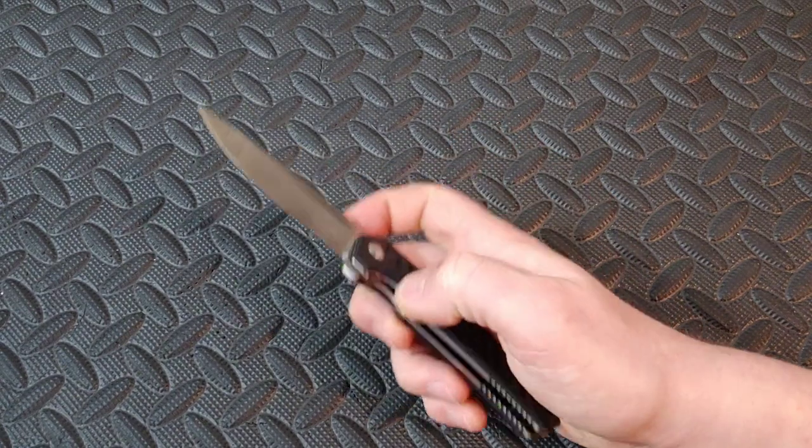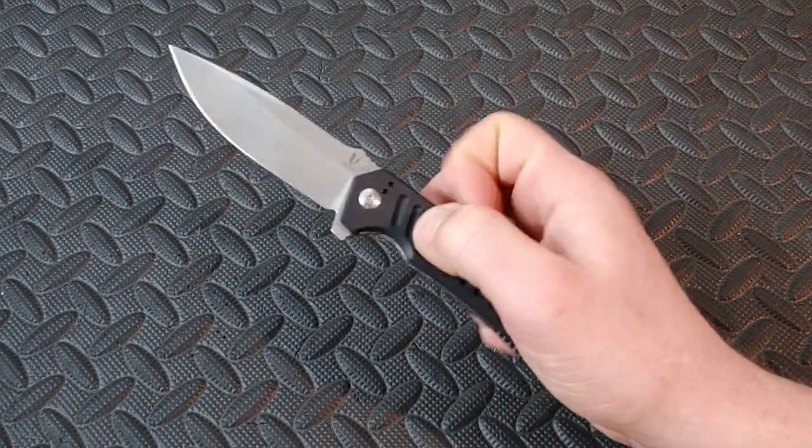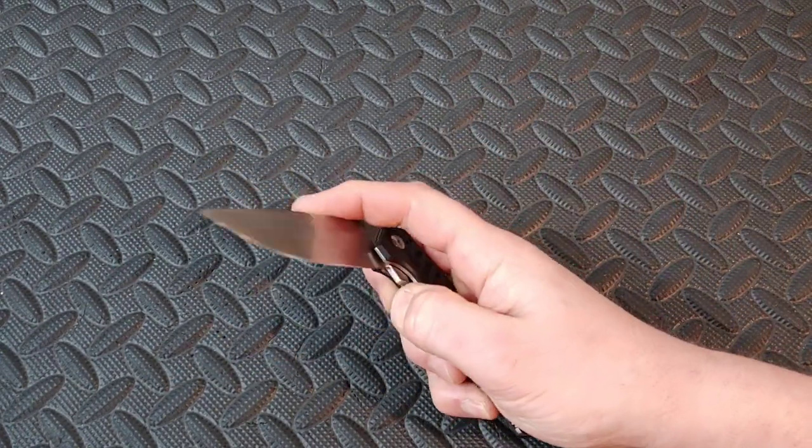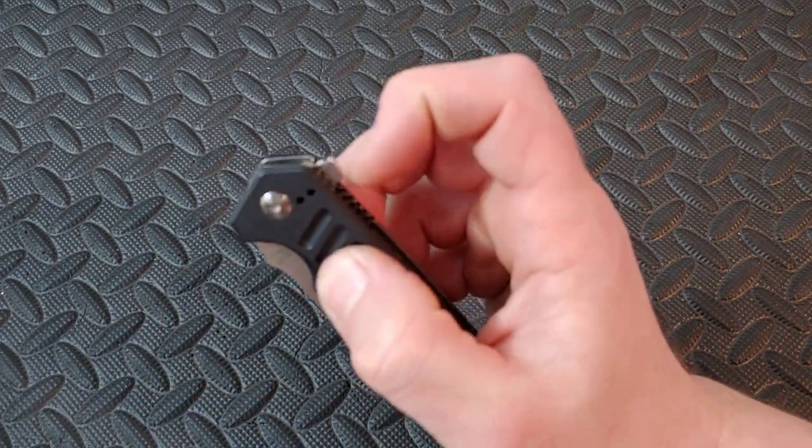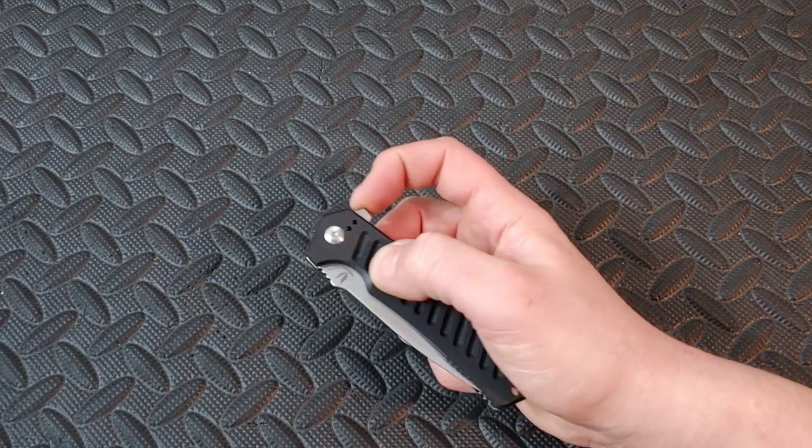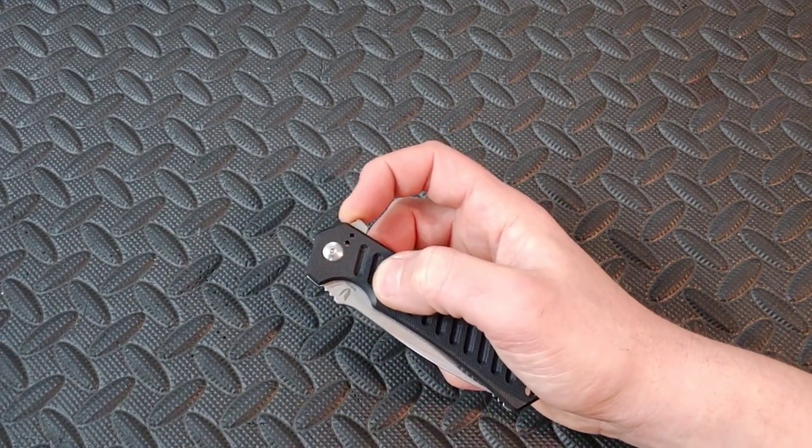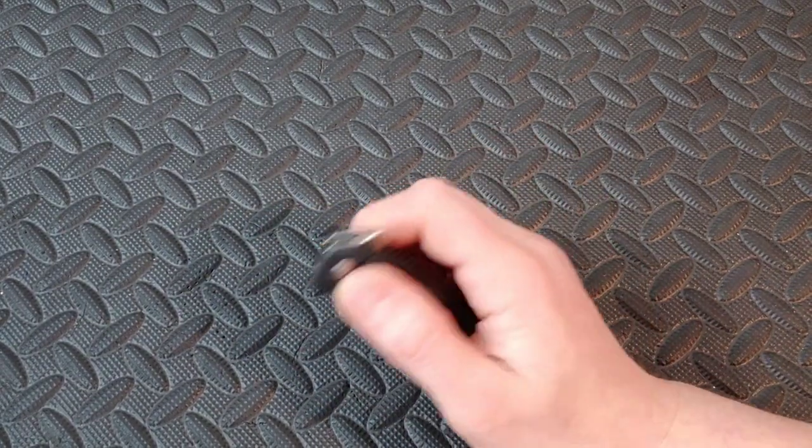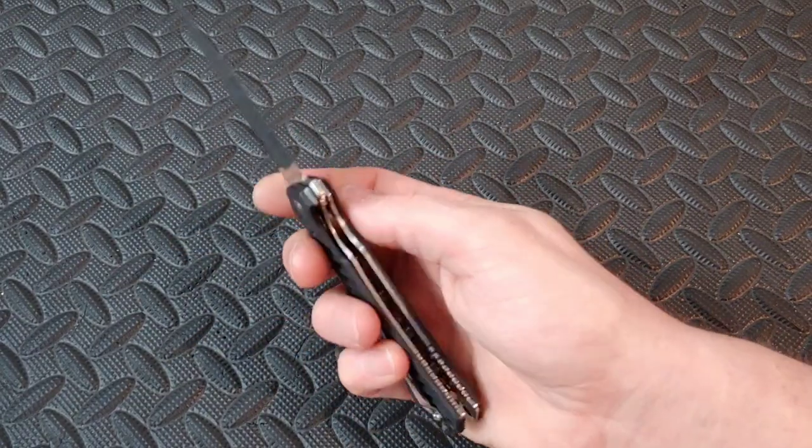So now the action is, I mean, the action was already okay. But now that it has jimping, I mean, the flipper tab just feels so much better. You can still push button it, obviously, but the light switch on it, because before it was just so slick. It doesn't have a strong detent, so it wasn't like the detent was so strong. But it was so slick, I wanted a little bit of texture. Very happy with it.